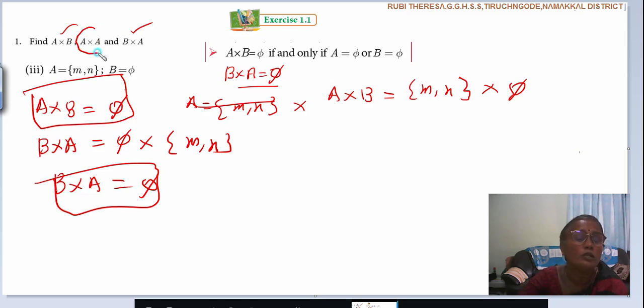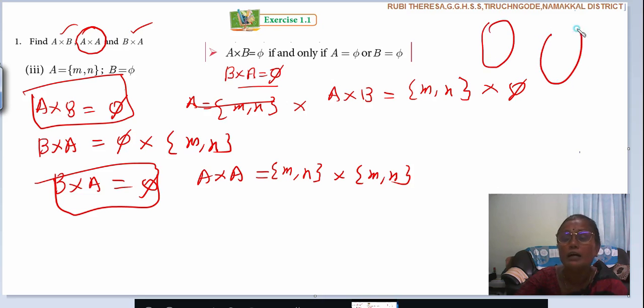Then what you can do? A cross A. Cartesian product of A and A. Here, A cross A means what? A with A. So what is A? M, N cross M, N. Those are unable to pair it directly. I told you already. You can pair it with the help of an arrow diagram also. A, A.